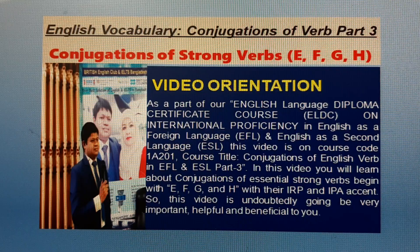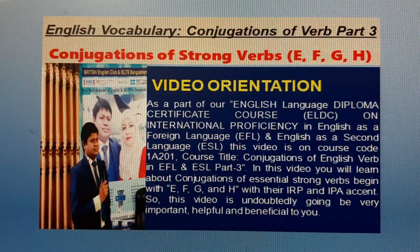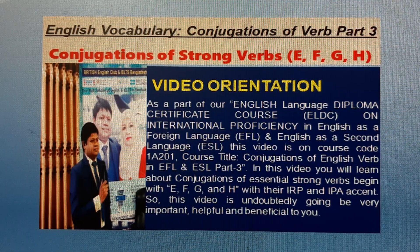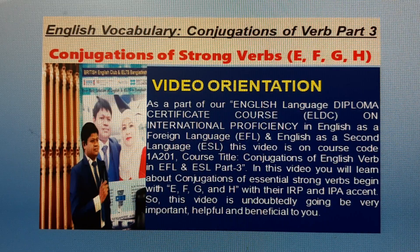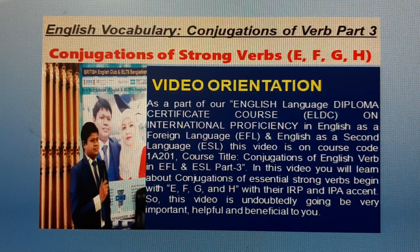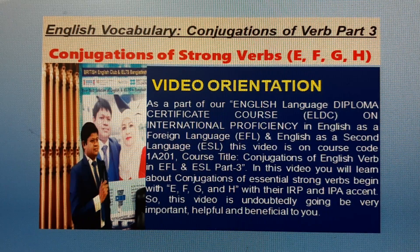As a part of our English Language Diploma Certificate course on International Professions in English as a Foreign Language and English as a Second Language, this video is on course code 18201, course title: Conjugations of Verb Part 3.